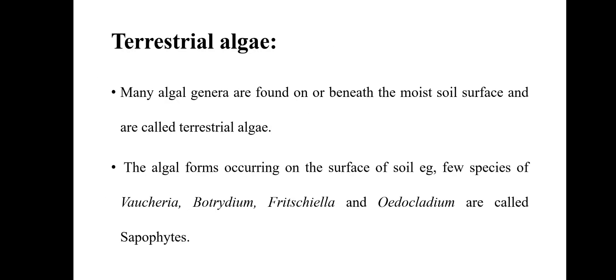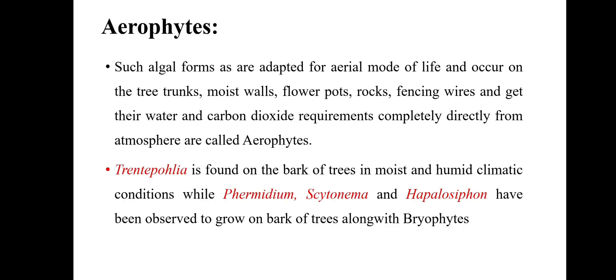Terrestrial algae — those algae which are found in terrestrial conditions are known as terrestrial algae. The algal forms occurring on soil surface are known as edaphophytes, and the examples are Vaucheria, Botrydium, Fritschiella, and Oedocladium. Remember these points very clearly as they are important from your examination point of view.